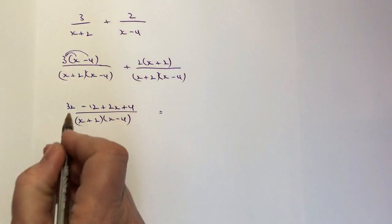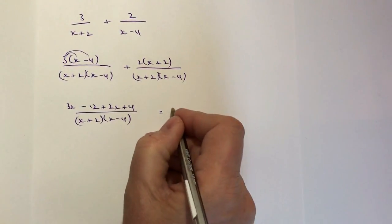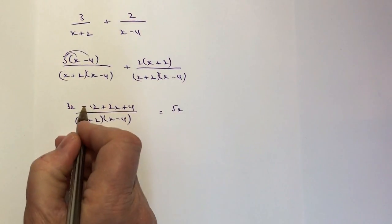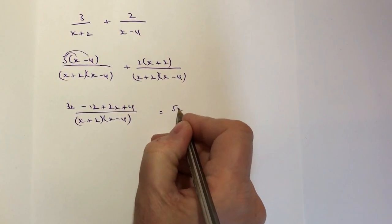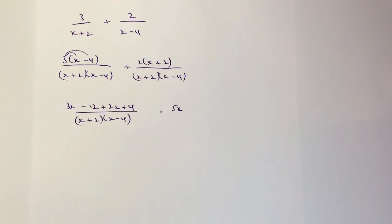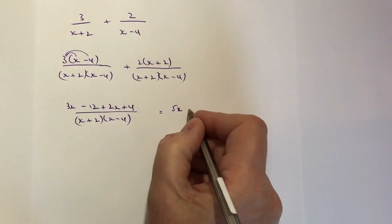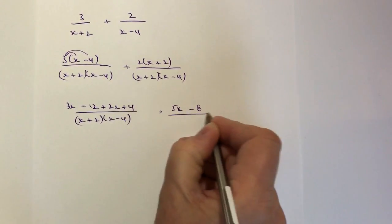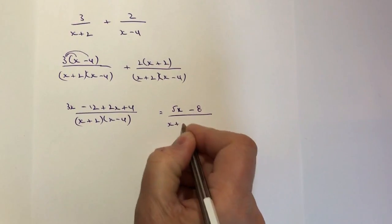I can write the top as 3x plus 2x is 5x, and then I've got -12 plus 4, so again be careful of negatives. -12 plus 4 is -8, and that's divided by (x+2) multiplied by (x-4).